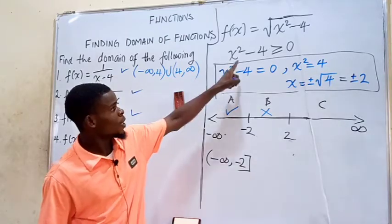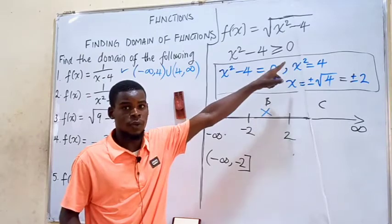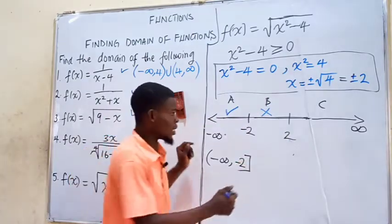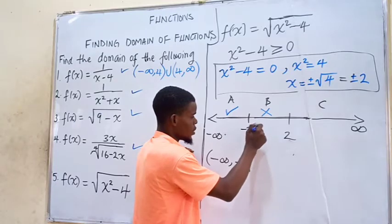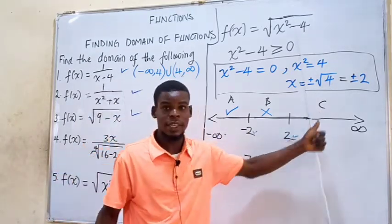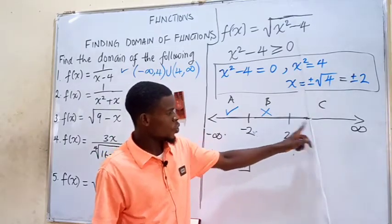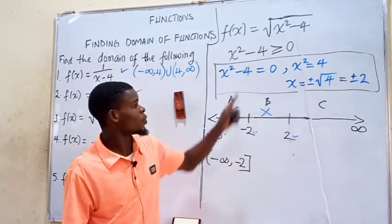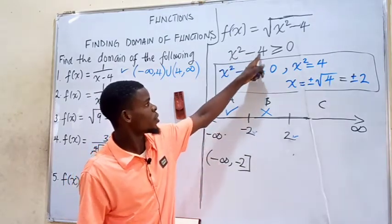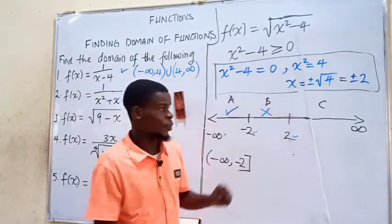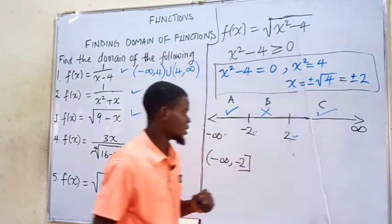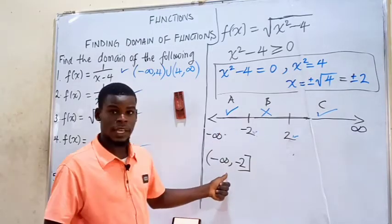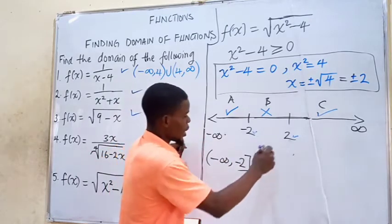Now let's test the boundary point x = 2: 2 squared is 4, and 4 minus 4 equals 0. Since 0 is greater than or equal to 0, the point x = 2 satisfies the inequality and is included. For interval C, from 2 to positive infinity, let's pick x = 4: 4 squared is 16, and 16 minus 4 equals 12. Since 12 is greater than or equal to 0, interval C satisfies the inequality. So intervals A and C are the only intervals that satisfy, and we take A union C. The domain is from negative infinity to negative 2, union from 2 to positive infinity.